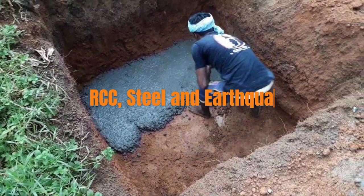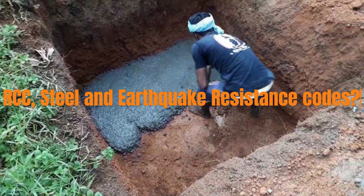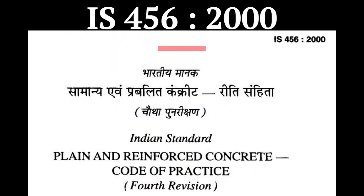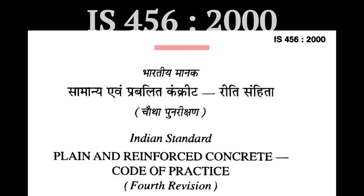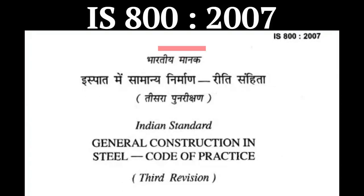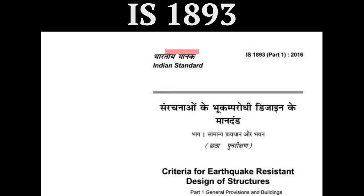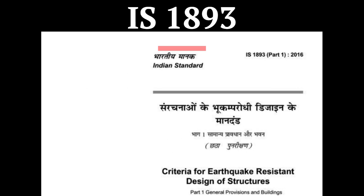Question 8: Name the codes used for RCC, steel and earthquake resistance design. Answer: For RCC — IS 456:2000, Plain and Reinforced Concrete, Code of Practice. For steel structures — IS 800:2007, General Construction in Steel, Code of Practice. For earthquake resistance design — IS 1893, Part 1, Part 2, Part 3, etc.